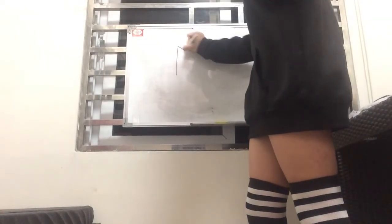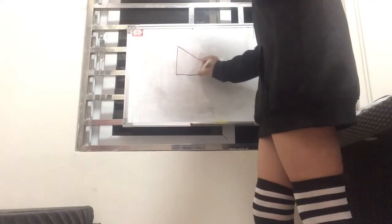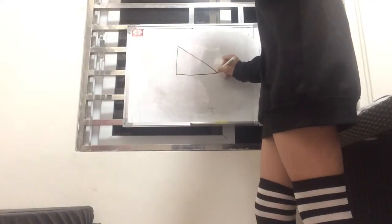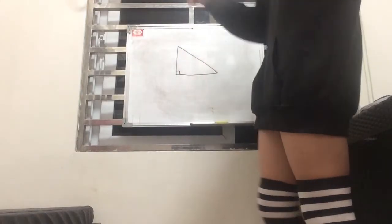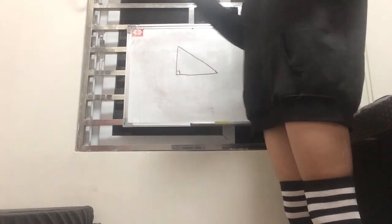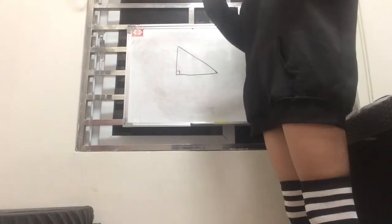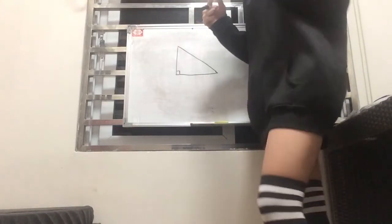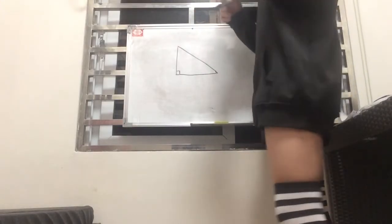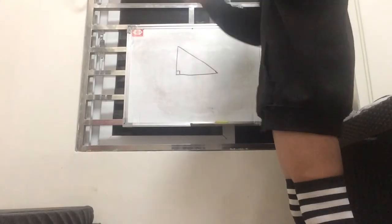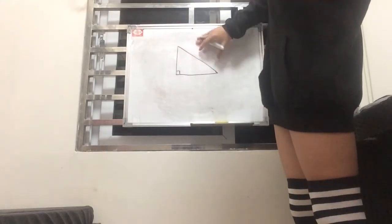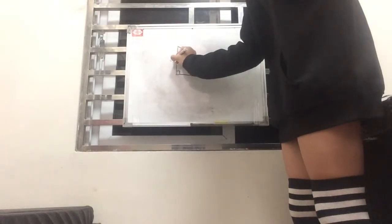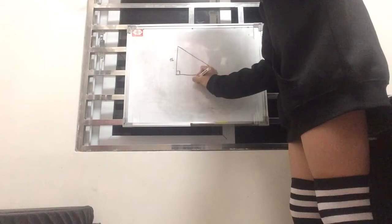So moving past those, knowing that, let's talk about right triangles and the Pythagorean theorem. Basically if you're given a right triangle, let's say this is our right triangle, and the box appears down here to signify that it is a right triangle.